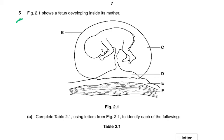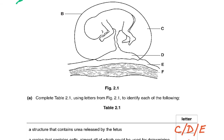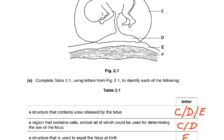Question five: figure 2.1 shows a fetus developing inside its mother. B is the amniotic fluid, D is the placenta, E is the lining of the uterus, and F is the muscle in the wall of the uterus. Complete table 2.1 using letters from figure 2.1. A structure that contains urea released by the fetus: it could be C, because the fetus urinates in the amniotic fluid; D, the placenta; or E, the lining of the uterus — but you could only write one.